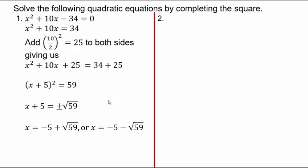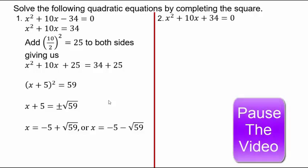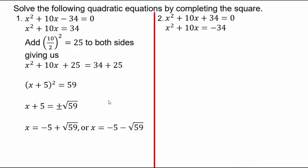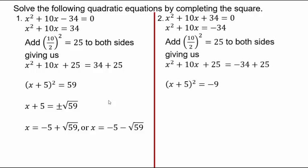Next example: x² + 10x + 34 = 0. Move 34 to the right to get x² + 10x = -34. Add 25 to both sides: (x + 5)² = -9. Take square roots: x + 5 = ±√(-9) = ±3i. So the solutions are x = -5 + 3i and x = -5 - 3i. Rewind and go step by step as needed until this process is mastered.